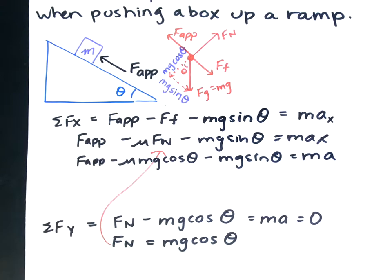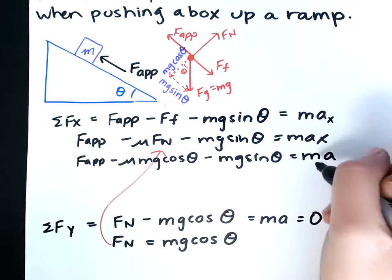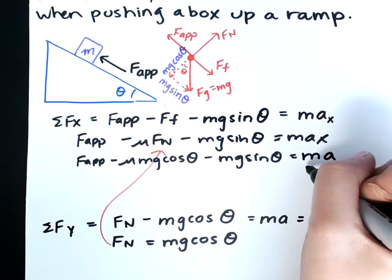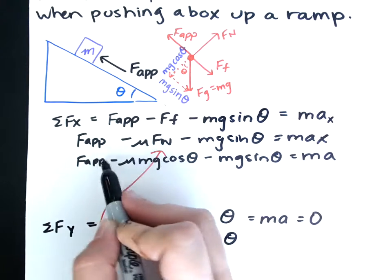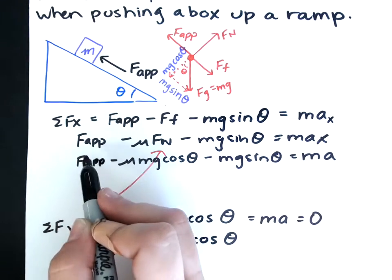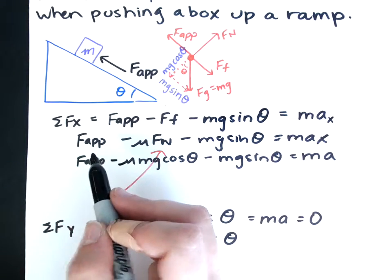And we want to solve for a. Okay, so what do we have to do to the equation? Divide by m. We can't just cancel the m's because there isn't an m in every factor. F applied does not have m in it.